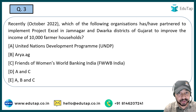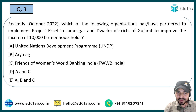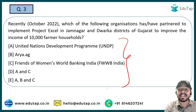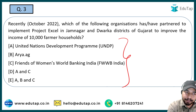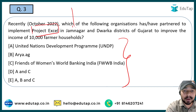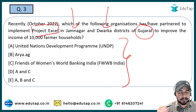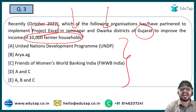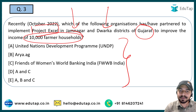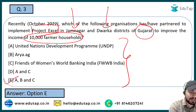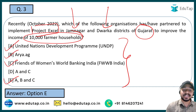This session is going to be a rapid fire one — you have to answer quickly in the comment section. This question asks the name of the organizations that have partnered to implement Project Excel, implemented in Jamnagar, Dwarka district of Gujarat. The aim of this project is to improve the income of 10,000 farmer households. The organizations that have partnered are all of A, B, and C — that is United Nations Development Program, Arya.ag, and the Friends of Women's World Banking India.